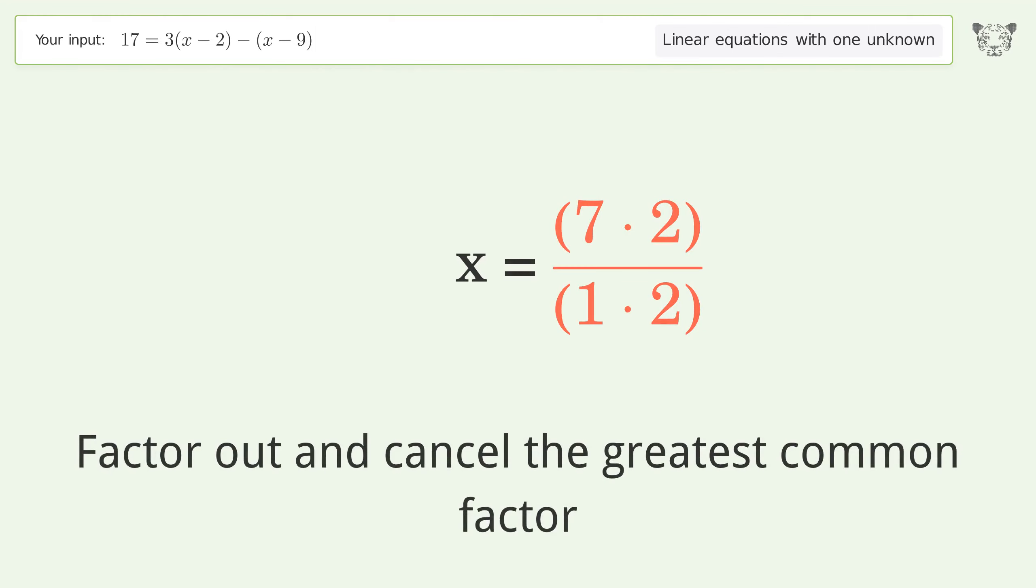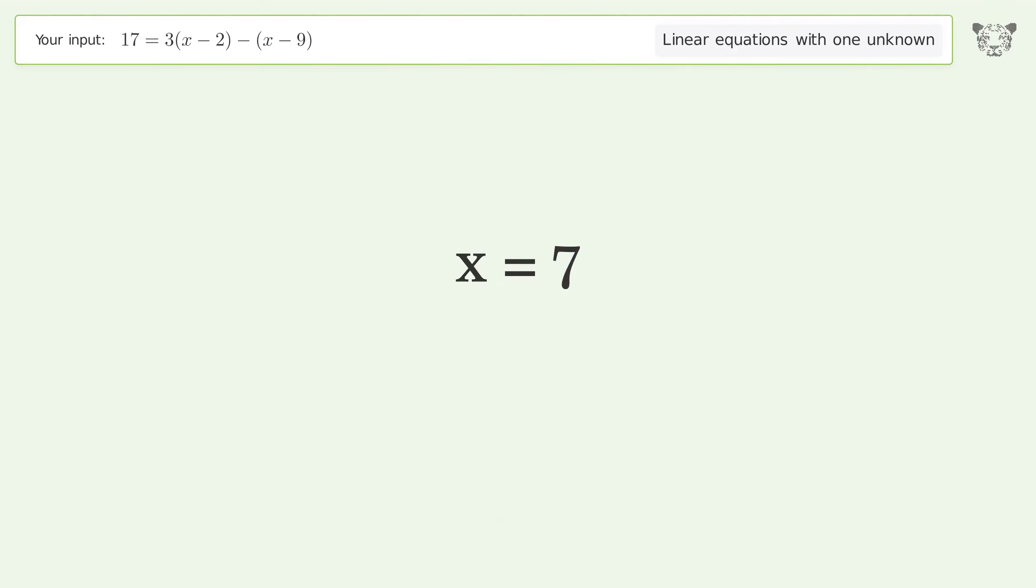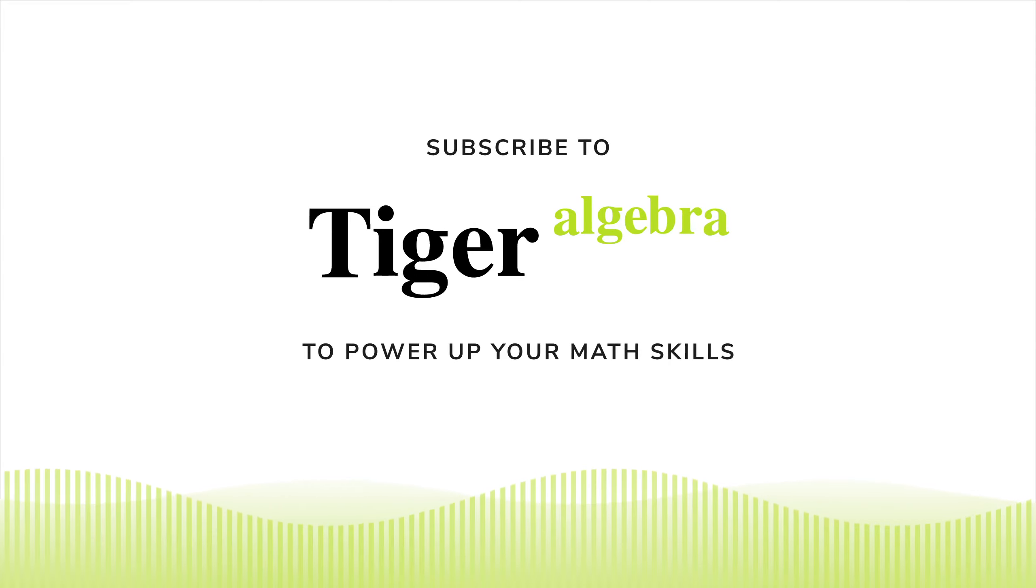Find the greatest common factor of the numerator and denominator. Factor out and cancel the greatest common factor. And so the final result is x equals 7.